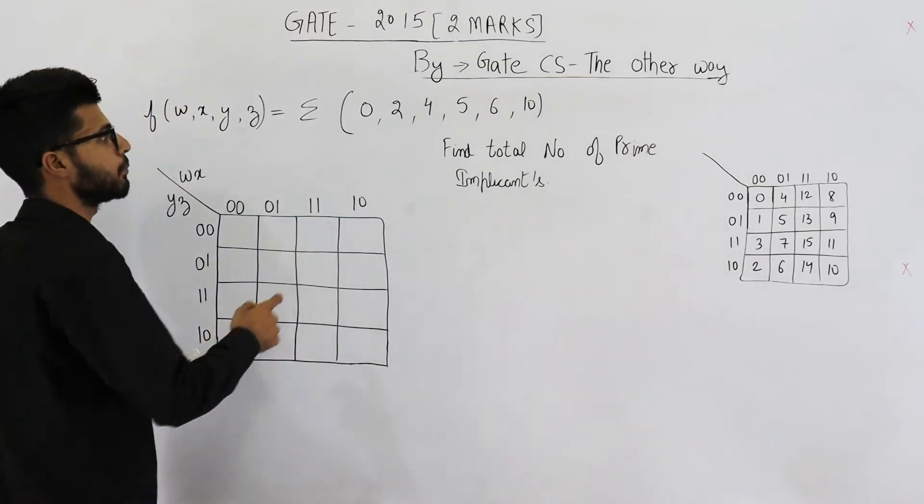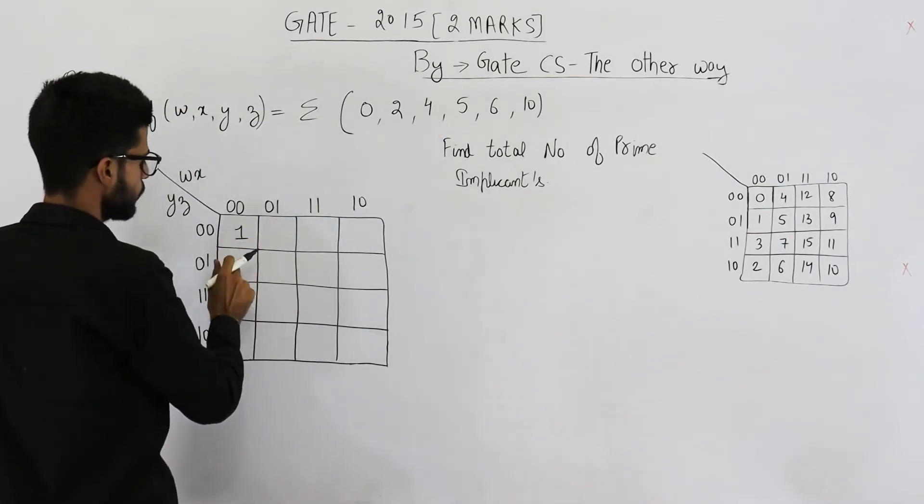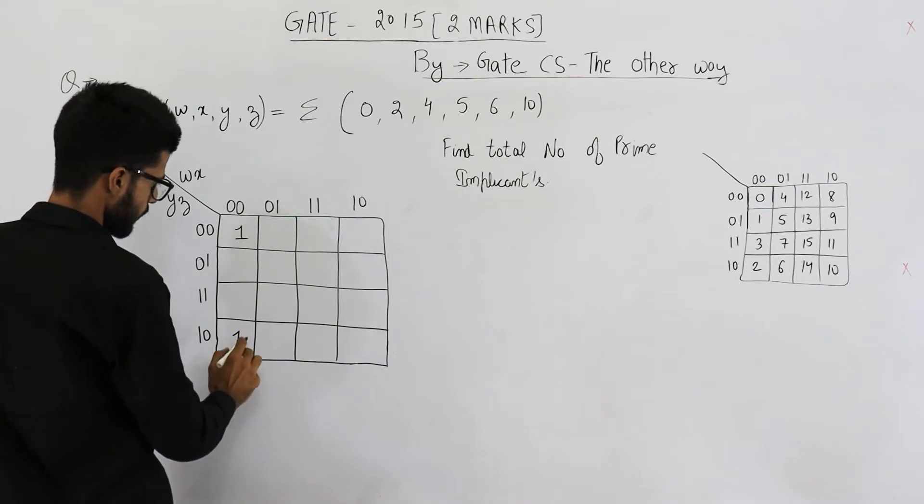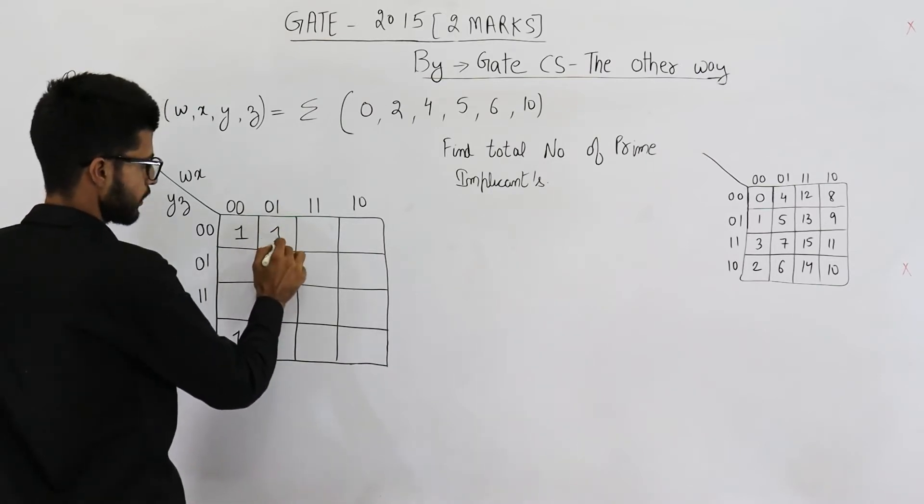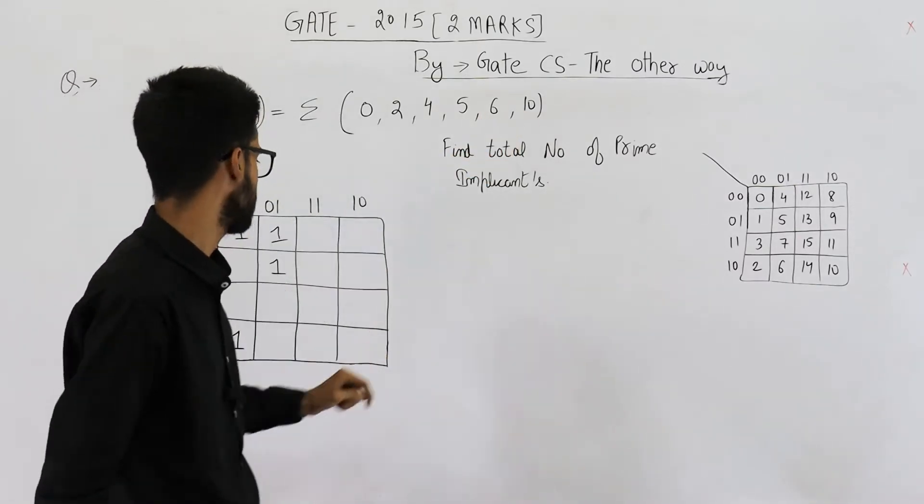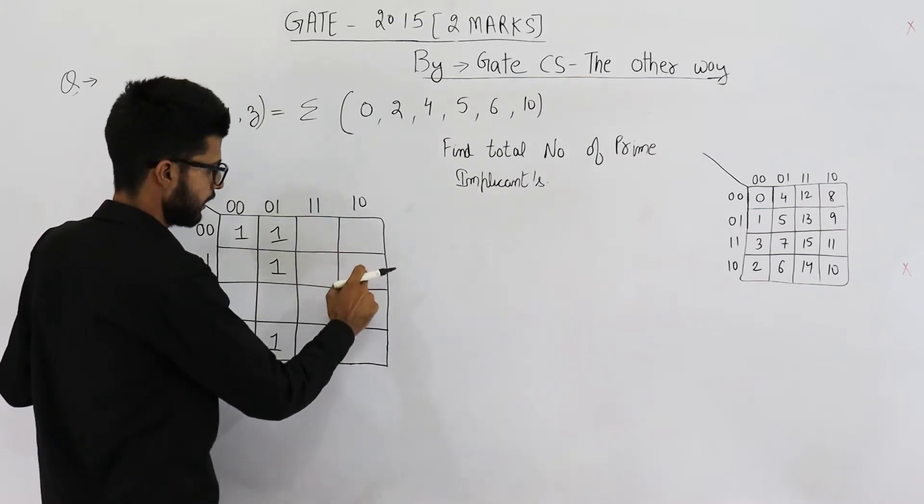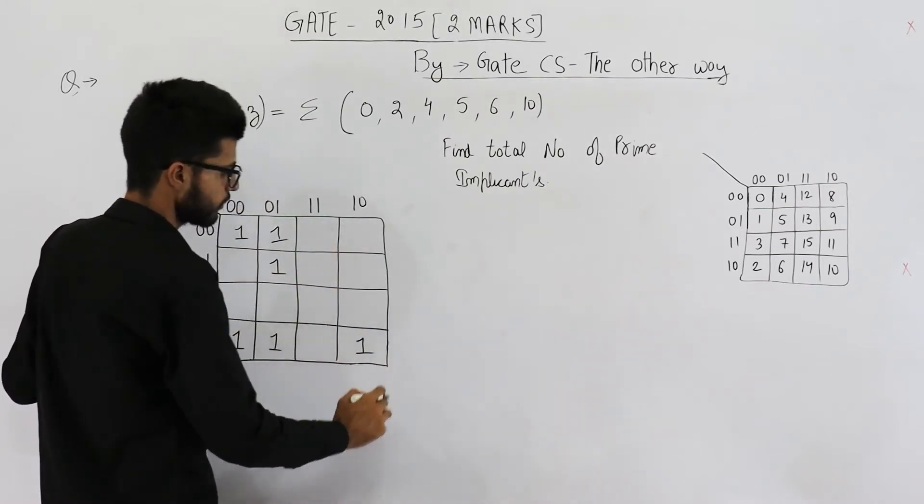Let's write it in the K-map. So 0, 2, 4, 5, 0, 1, 2, 3, 4, ok, 5, 0, 2, 4, 5. Then we have 6 and 10. 5, then 6 will be here, 7, 8, 9, 10, so 10 will be here, ok.